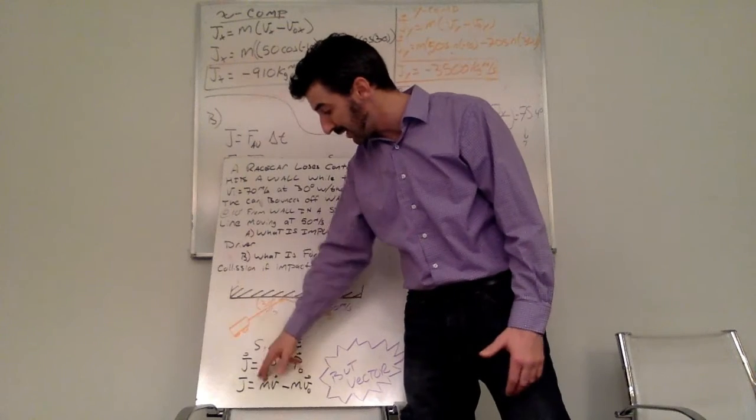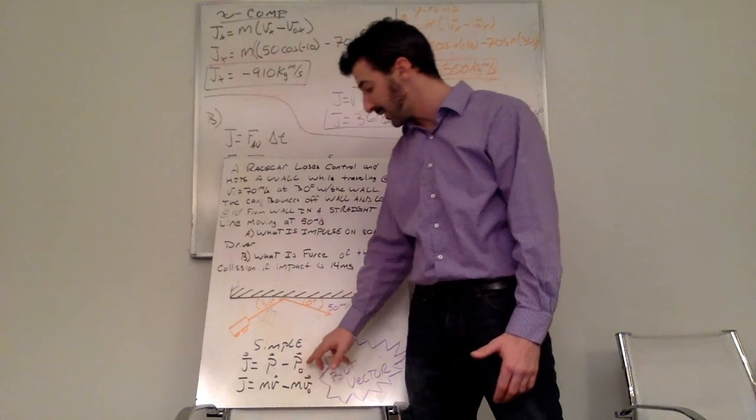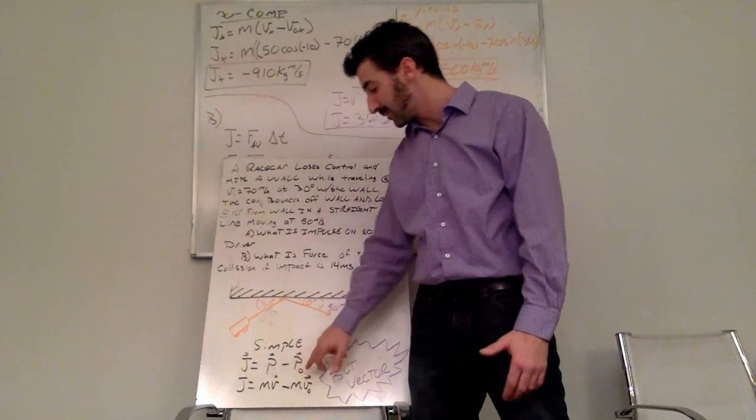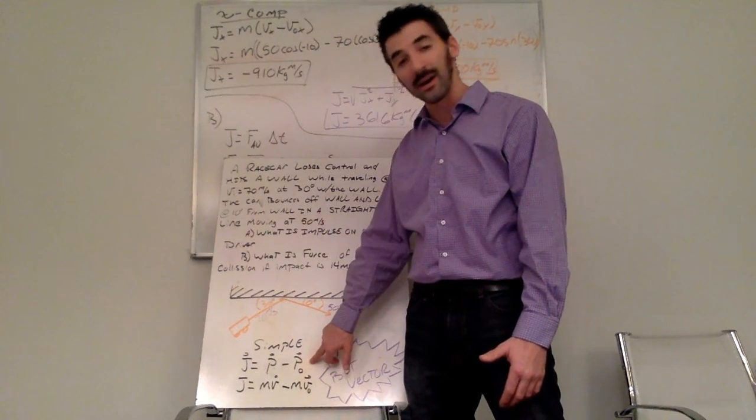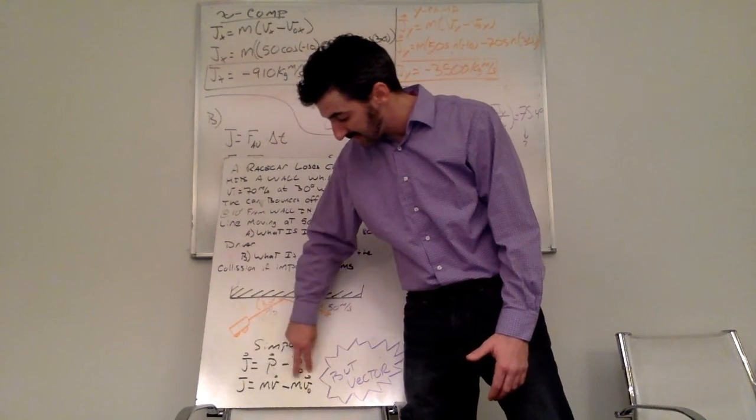So we're going to use a simple impulse is my final momentum subtracting my initial momentum. Momentum is mass times velocity.